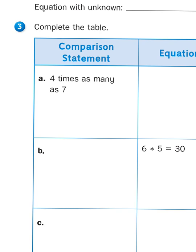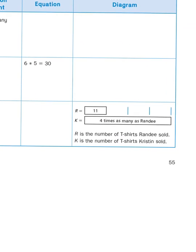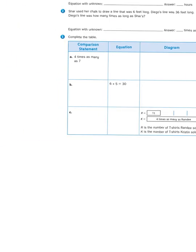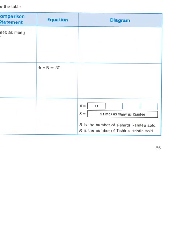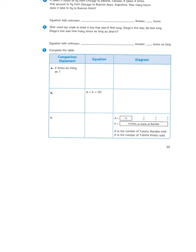So, that's basically just writing out a multiplication problem using words, 4 times as many as 7. The equation is the actual number sentence using symbols, like they do in 3b. 6 times 5 equals 30. And then down at the bottom, in 3c, we have a diagram or a picture that helps us represent.